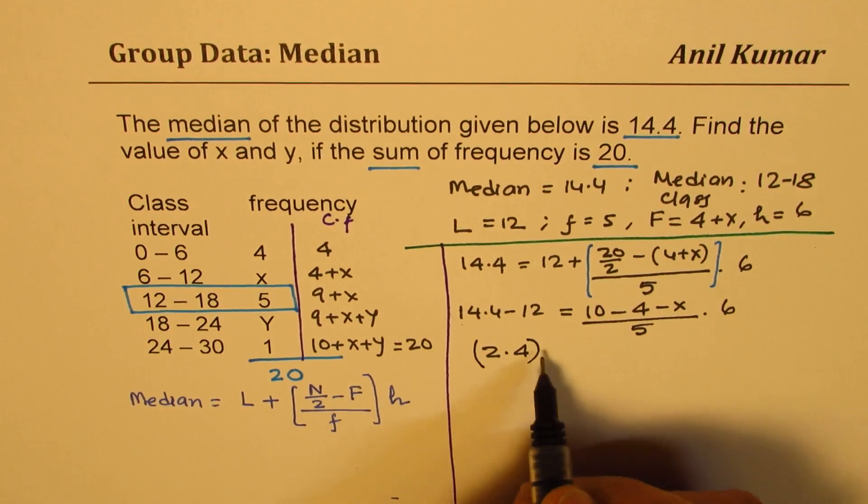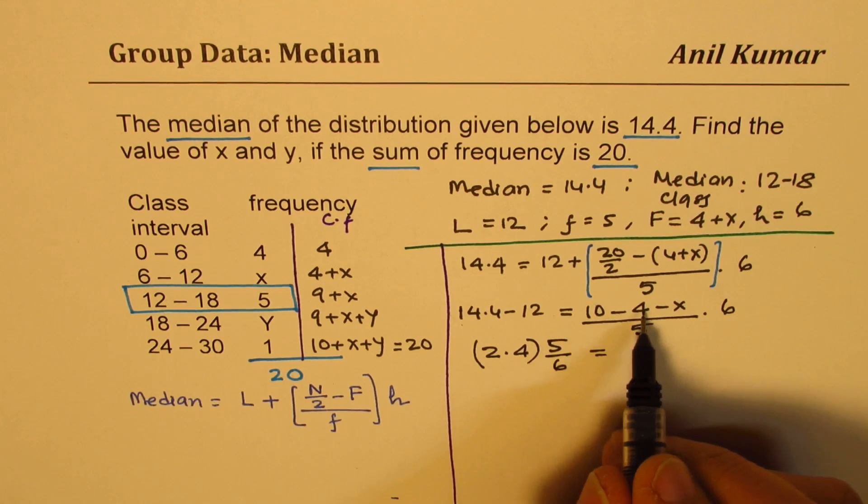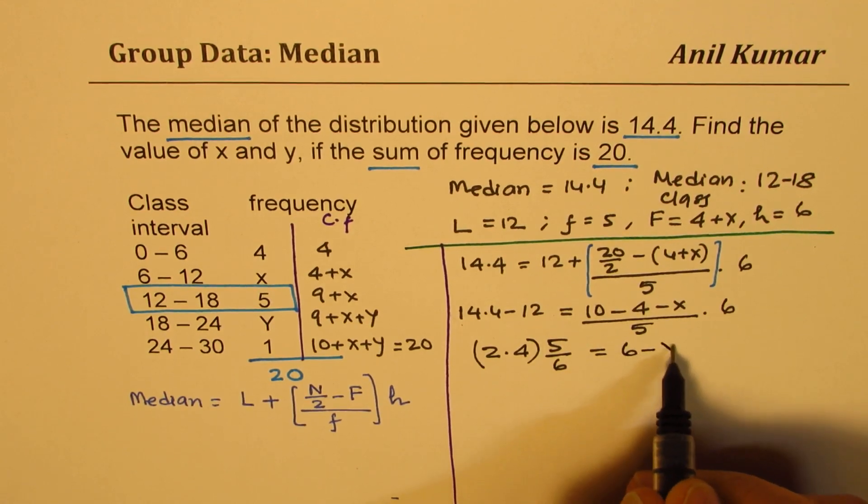So let's do this: 2.4 times 5 over 6 equals 10 minus 4 is 6, 6 minus x.